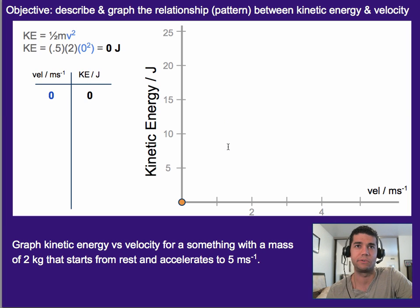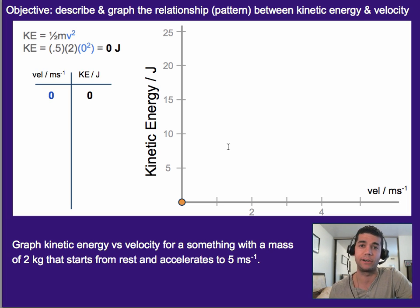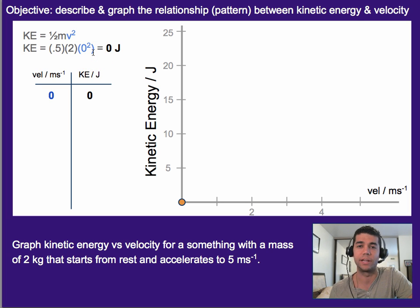Let's practice graphing kinetic energy to see what type of trend it produces. We'll graph the kinetic energy of an object with a mass of two kilograms, starting from rest and accelerating to five meters per second. We can see that plugging in zero velocity gives a kinetic energy of zero — no movement means no kinetic energy.